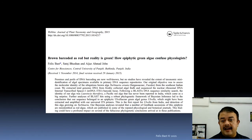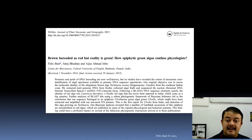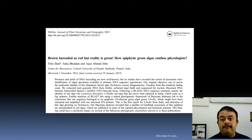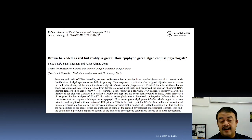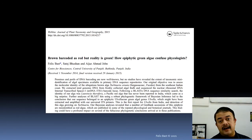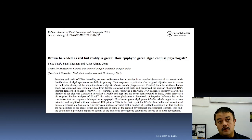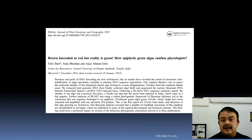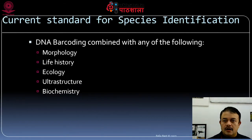An example of database confusion: in one of the speaker's papers, a brown alga was barcoded as red but was actually a green endophytic alga that got amplified, and the nearest match in the sequence repository was a red alga. Such confusions mean you have to be careful about database reliability. Many species are misidentified in NCBI because anybody can submit a sequence to it.